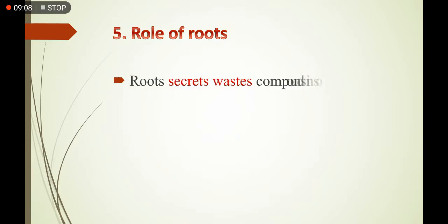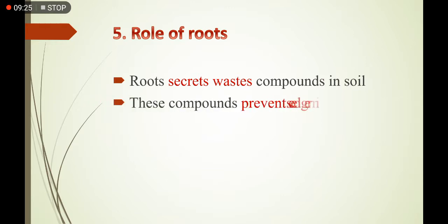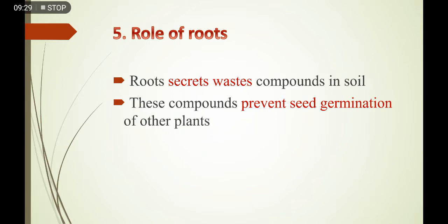The fifth process for excretion in plants is the role of roots. Roots have metabolic reactions and excrete their waste material into the surrounding soil. Roots create waste compounds in the surrounding soil, and these waste compounds are also used for competition with other plants, because they prevent seed germination of other plants.